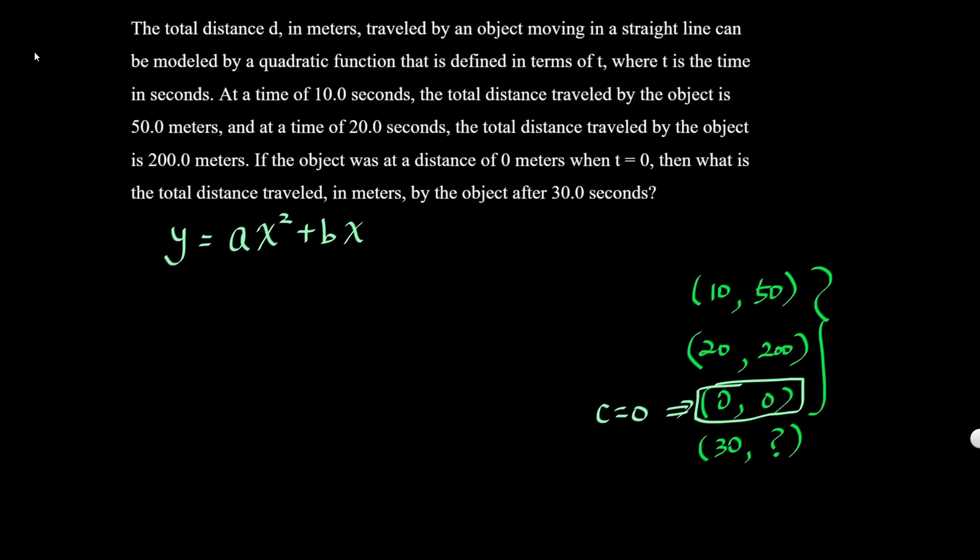Now let's use these two points to figure out what a and b are. We're gonna plug in (10, 50), so 50 = 100a + 10b. For the next point, 200 = 400a + 20b.